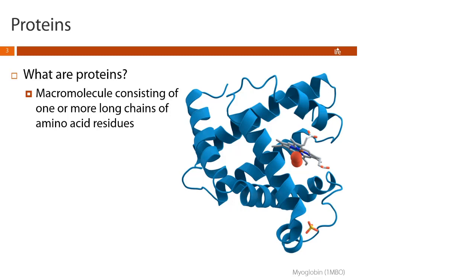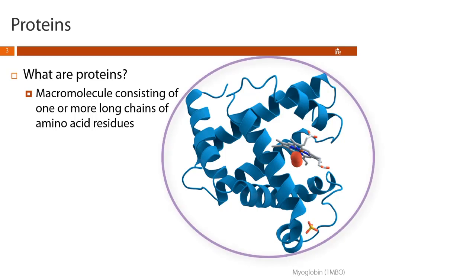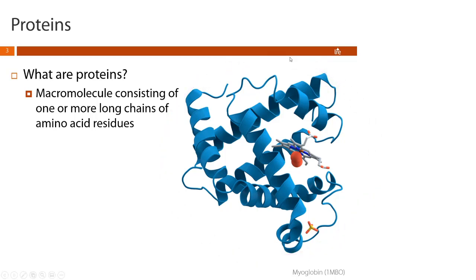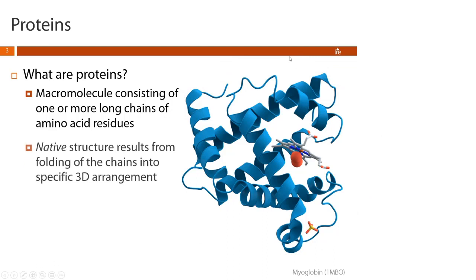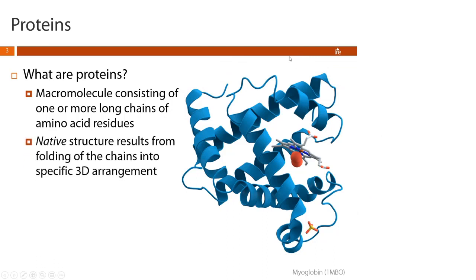Another thing that's different about proteins is that these long amino acid chains have to fold over on top of each other, generally forming this globular structure that you see with myoglobin here. This is called protein folding, and this is what creates the native structure — meaning the biologically active structure of proteins.